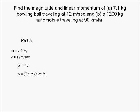We get P equals 7.1 kilograms times 12 meters per second. Put this into your calculator to solve for P. We get the momentum of the bowling ball equaling 85 kilogram meters per second.